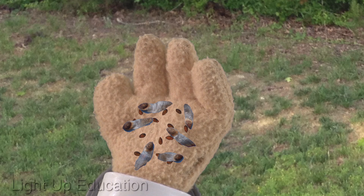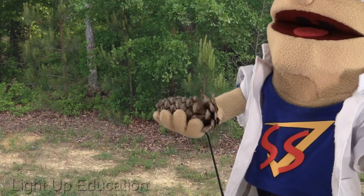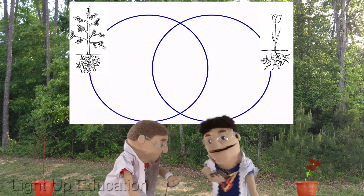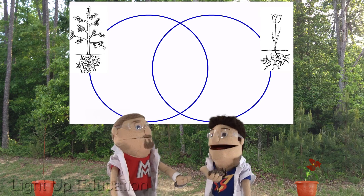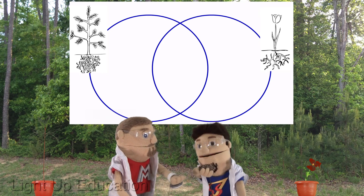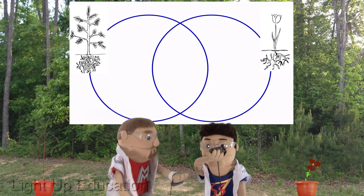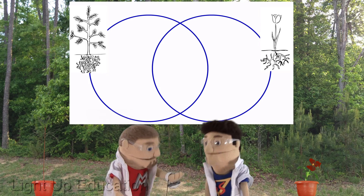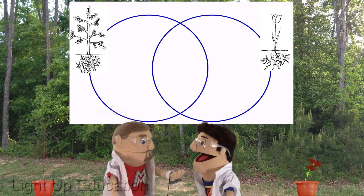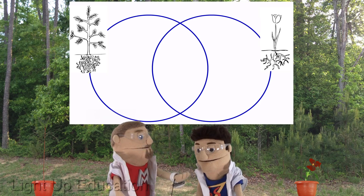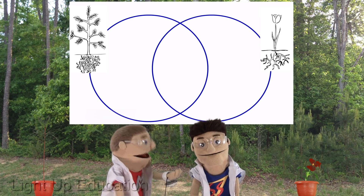Alright Matt, let's start with the seeds. Take a look. Wow, the shiny ones are really tiny. Yeah, those are the flower seeds, and the bigger rough ones are the pine tree seeds. It was a pine cone, Matt. That's where you usually find pine tree seeds — they're located right inside. Even though the seeds are very different, they're both seeds, and that's something they have in common.